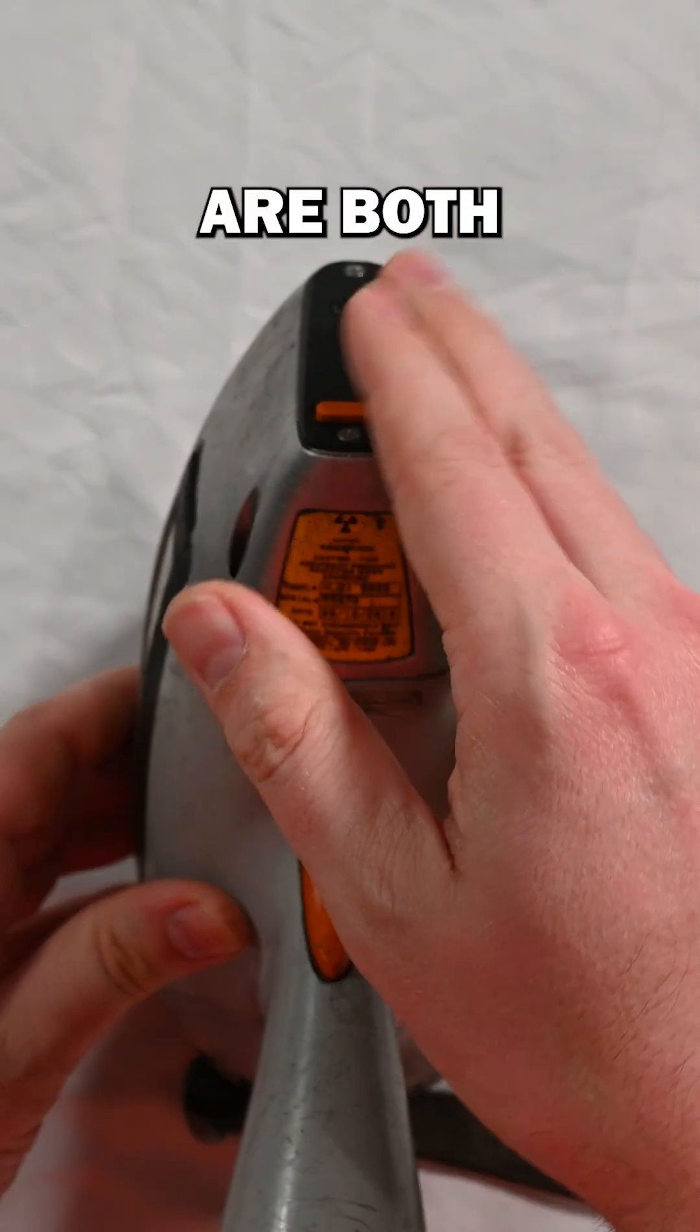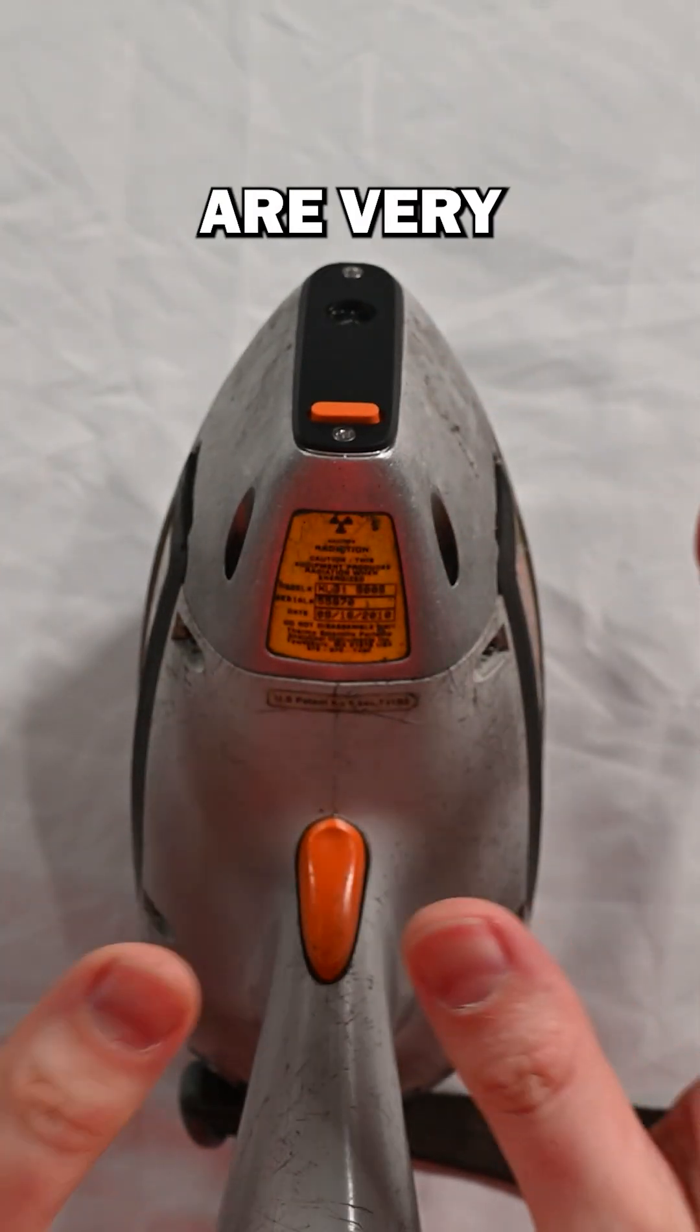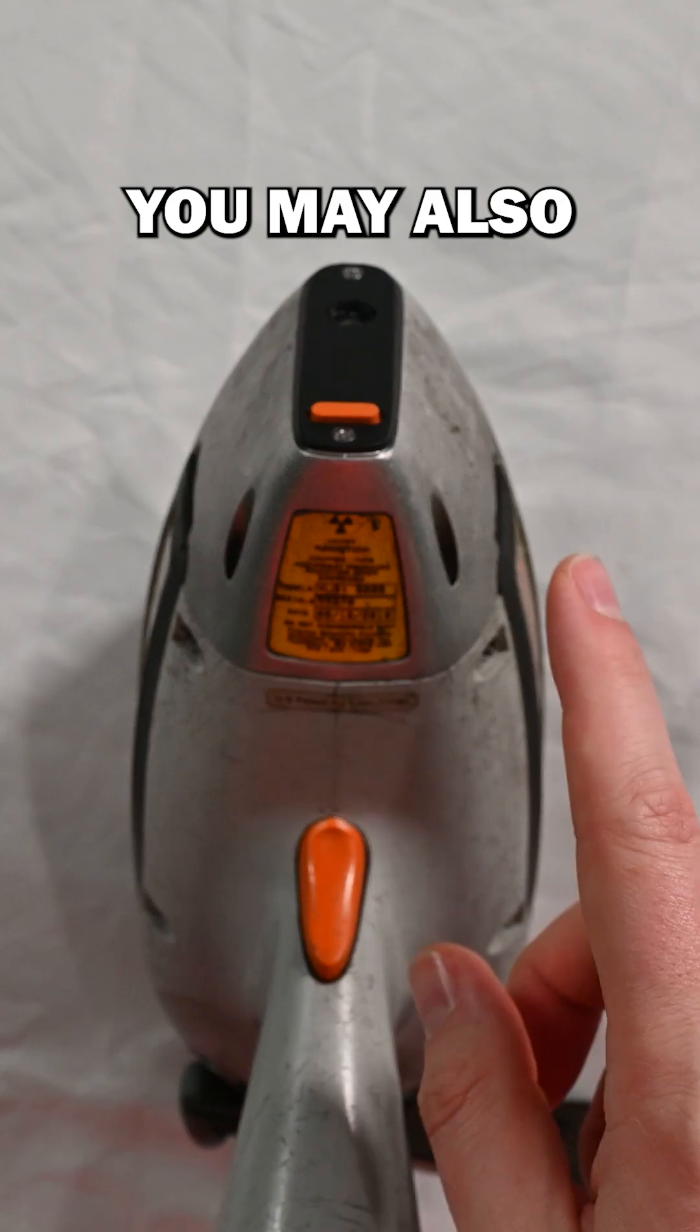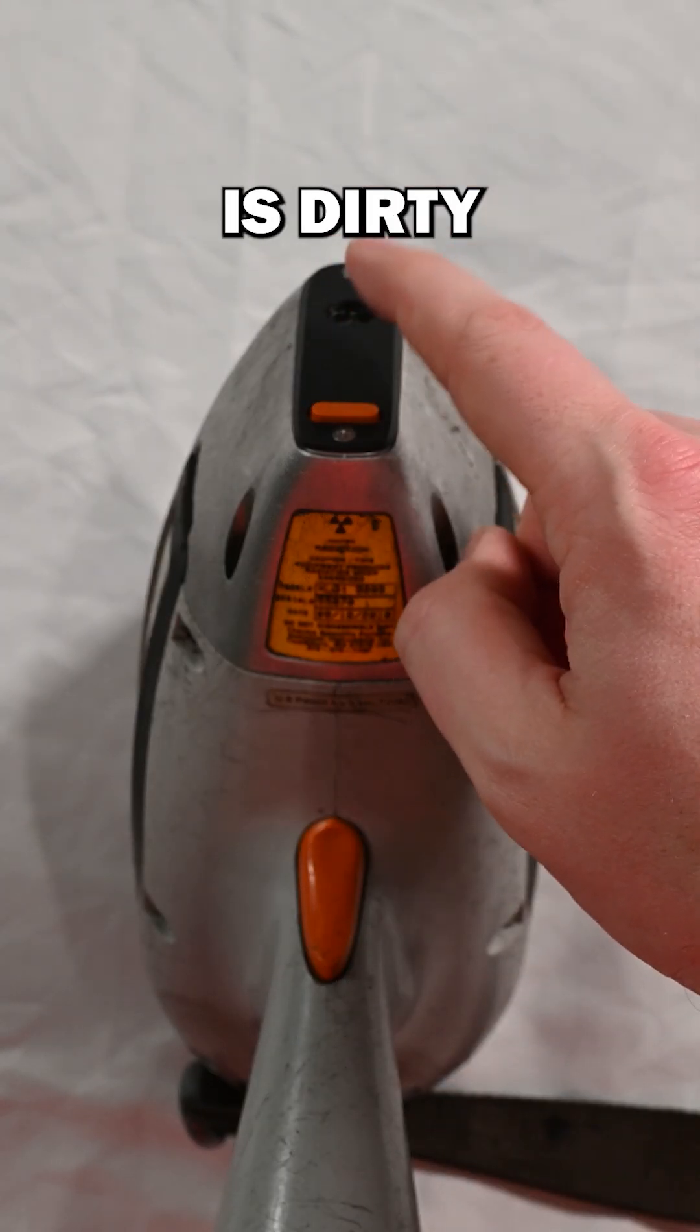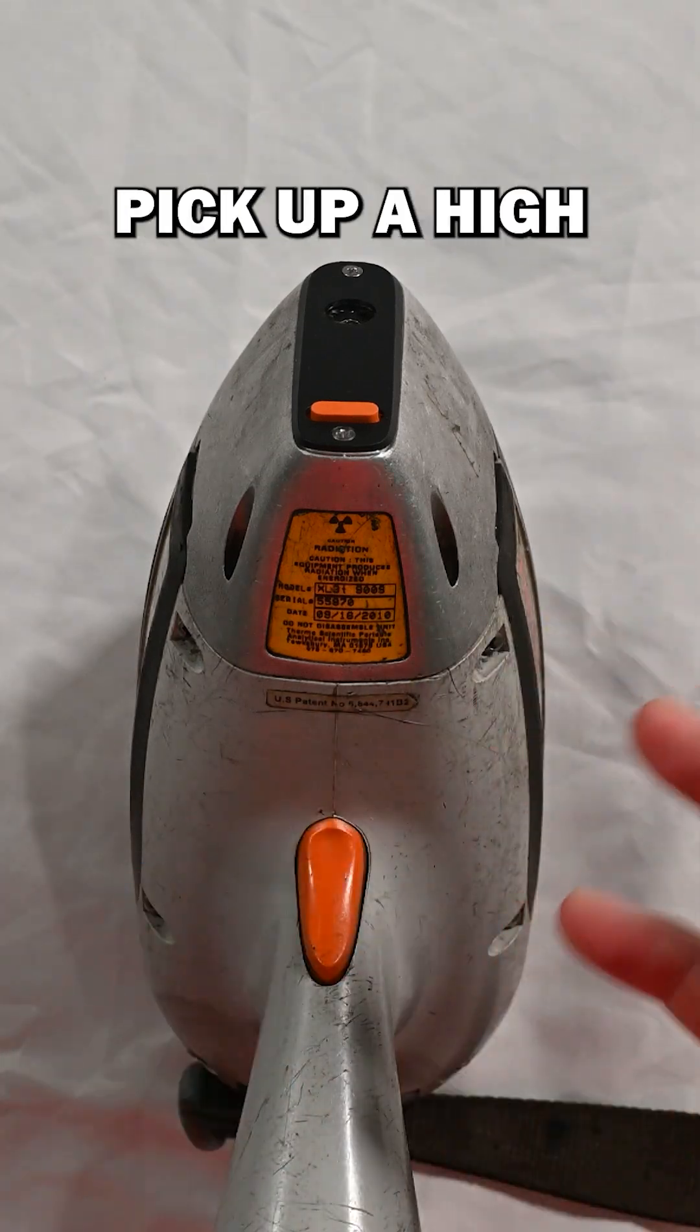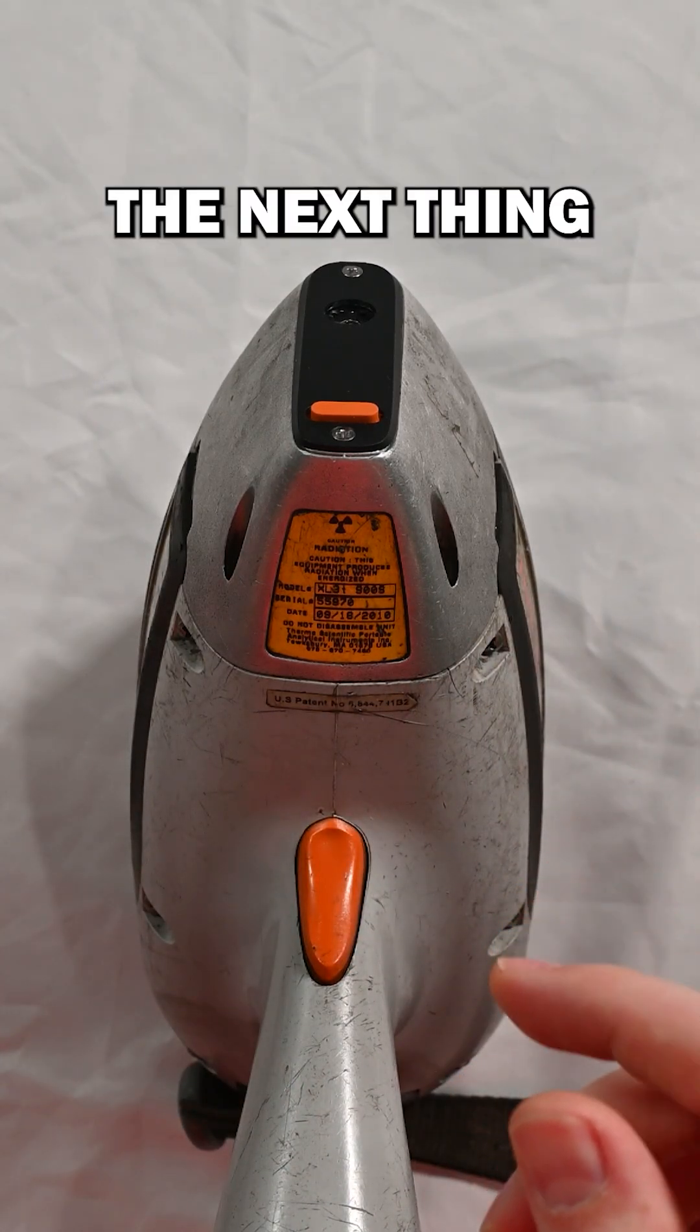The x-ray tube and detector are both inside the nose here and they are very sensitive components, and that's the reason why we want to change that window. You may also change the window if this film is dirty, which you might pick up silica or something like that in the field and you'll pick up a high silicon reading.